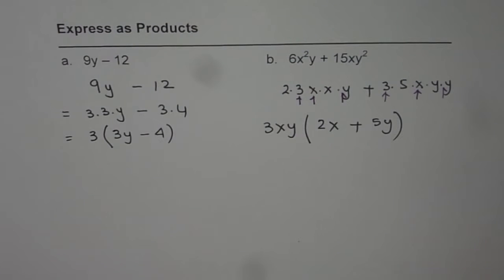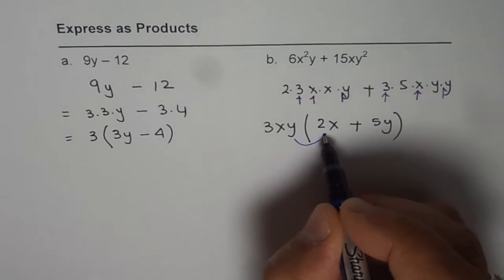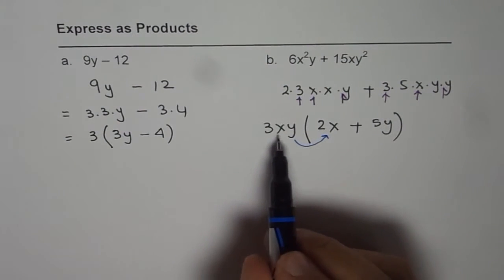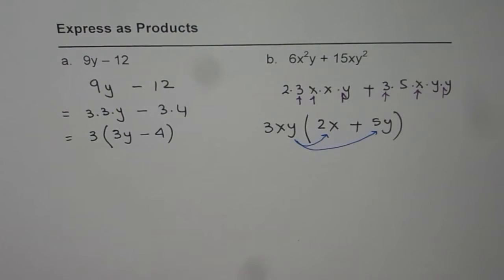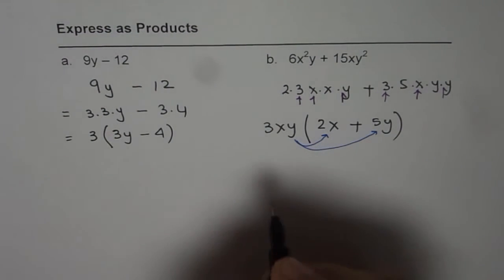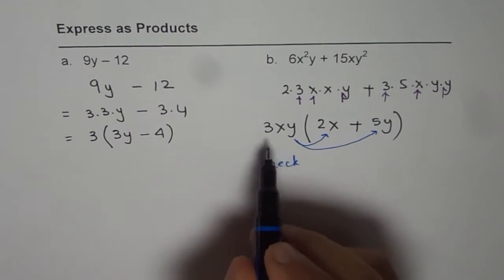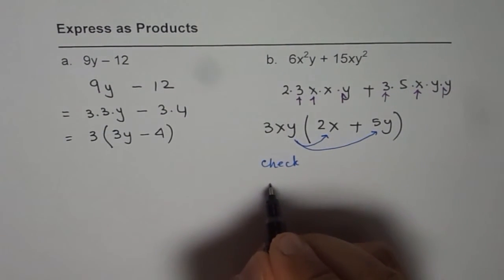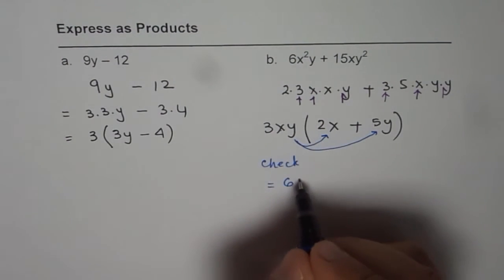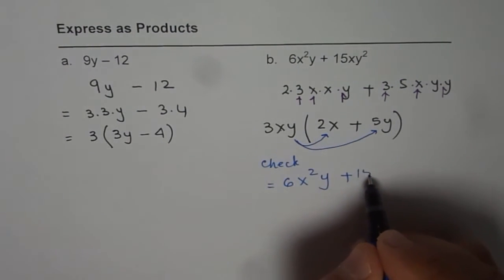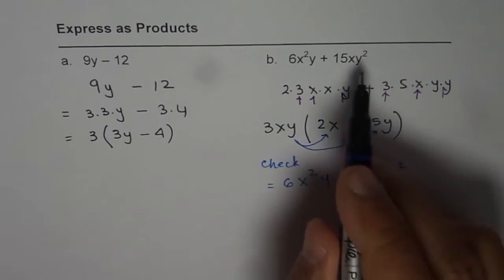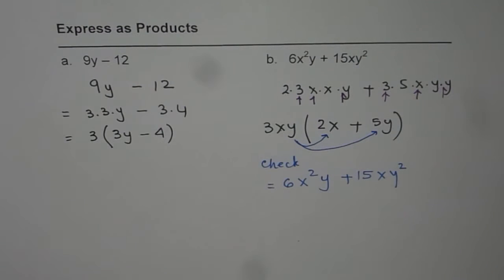As an exercise, you can apply the distributive property. Multiply 3xy with 2x and then with 5y, and see if you get the original expression back. Let's check if it is correct. 3 times 2 is 6, so we get 6x²y, plus the second term will be 3 times 5 which is 15, times xy², which is the starting expression. So it is indeed the correct product form.